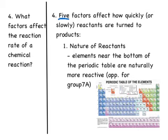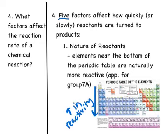The first factor is basically the nature of reactants. If you remember from last semester, we talked about trends in the periodic table — as you go down a group, the reactivity is going to increase. It's the opposite for group seven, which increases going up. Because reactivity increases going down, elements at the bottom are naturally more reactive than those at the top of the periodic table. So if we want something to quickly react, we might choose a metal from the very bottom rather than metals near the top.